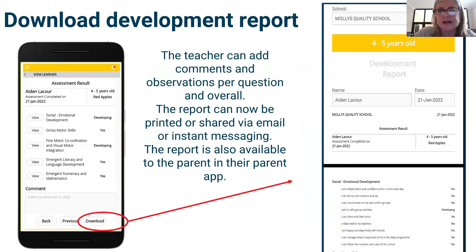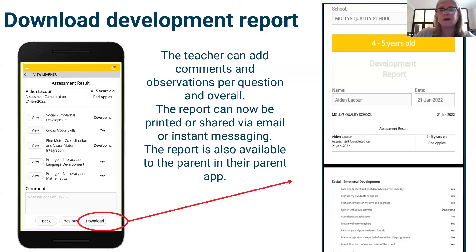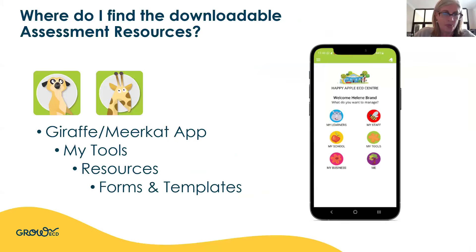Paulina is asking about how we share the report with parents. The teacher can add a comment and observation, and the report can now be printed, or you can download and share it on email or WhatsApp. If the parent has the Grow parent app — we call that one the Lion app — they can open their Lion app and see the report directly in their own parent app. You can print it, email it, or share it — it's a great report.